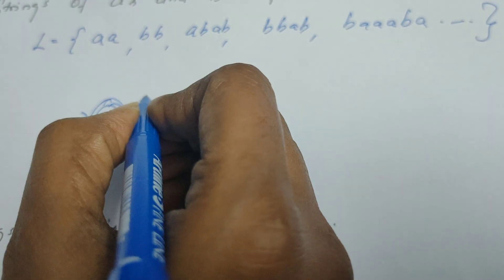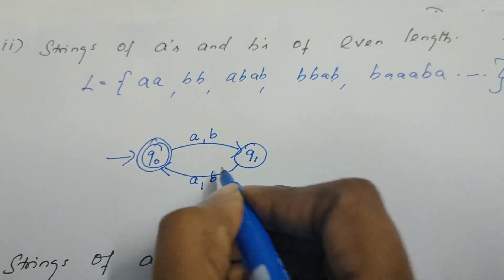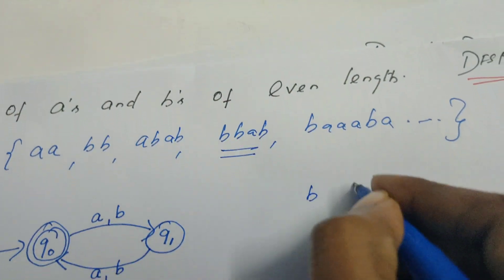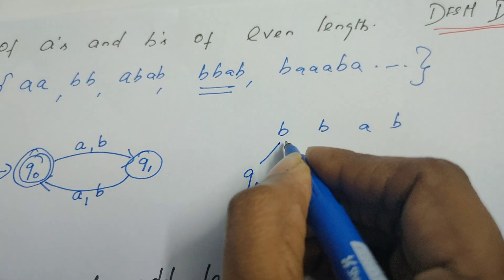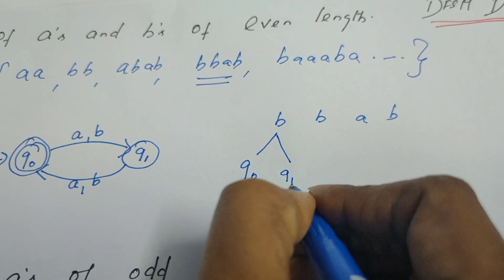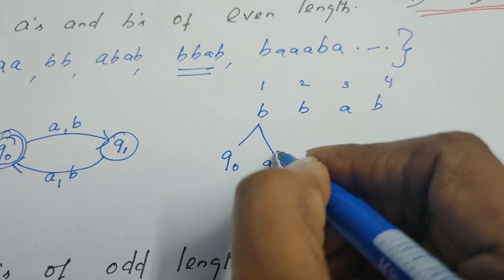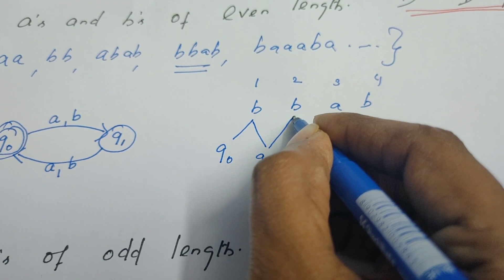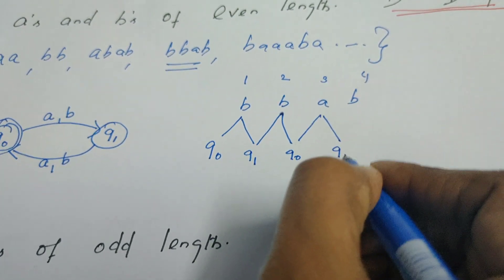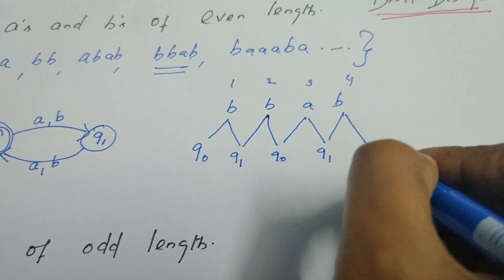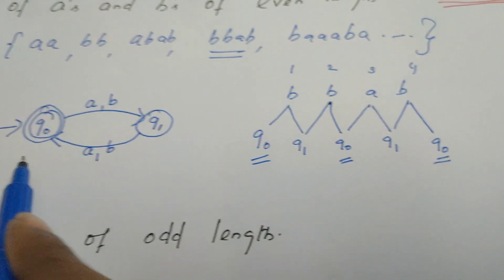The characters it reads can be A or B on both transitions. Let us consider the string BBAB. From Q0, on reading B the state changes to Q1. From Q1, on reading B it enters Q0. From Q0, on reading A it enters Q1. From Q1, on reading B it enters Q0. For every even length it ends in Q0, that is why we declare Q0 as the final state.